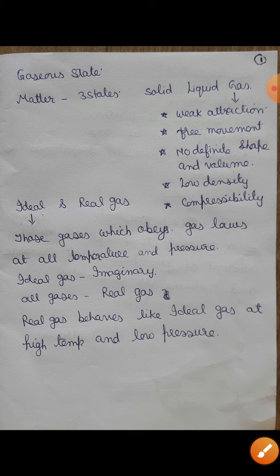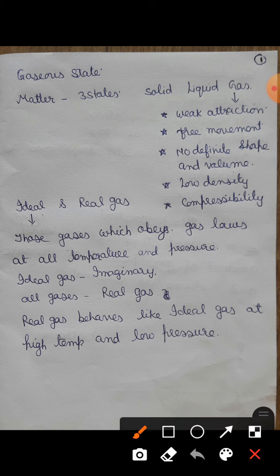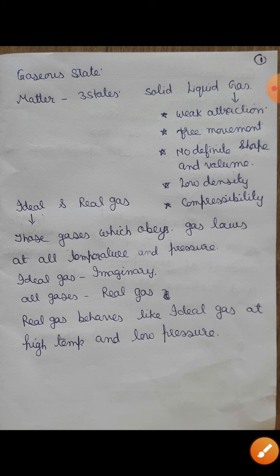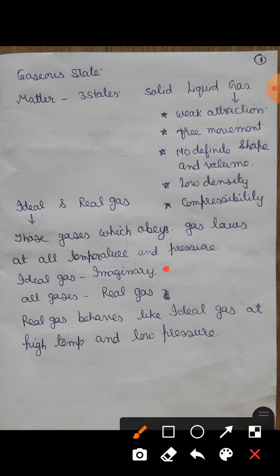जब हम Gas की बात करते हैं तो सभी Gases दो तरीके की category में आती हैं - Ideal Gas और Real Gas। Ideal Gas हम उस Gas को कहते हैं जो Gas Laws - Boyle's Law, Charles' Law, Avogadro's Law - का पालन करती है। Those gases which obey gas laws at all temperature and pressure are termed as Ideal Gases।